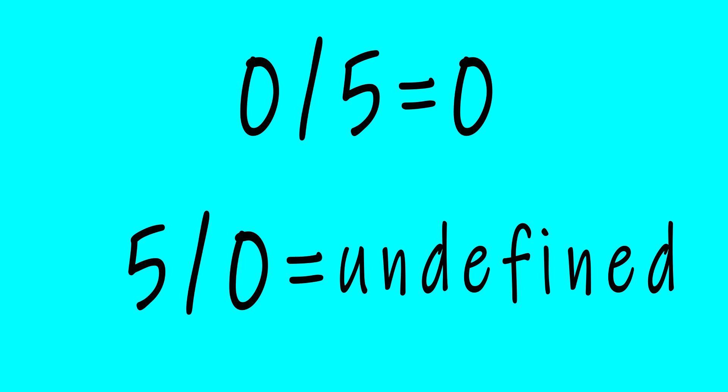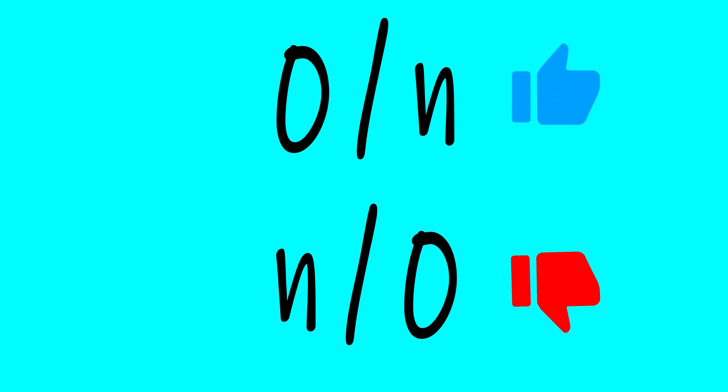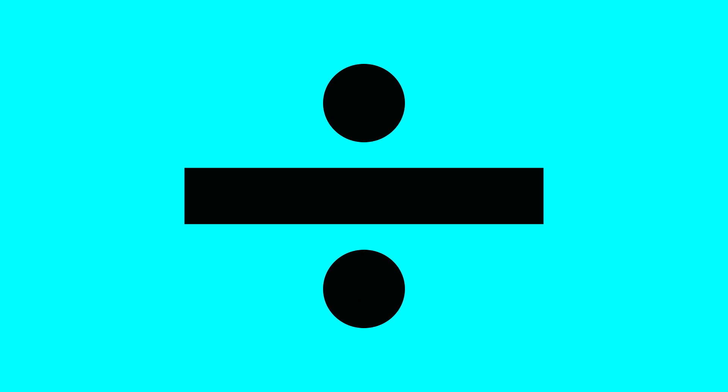It just can't be done. So what's going on here? Why can we divide zero by n, but we can't divide n by zero? To answer this, we need to take a look at what division as a function represents.